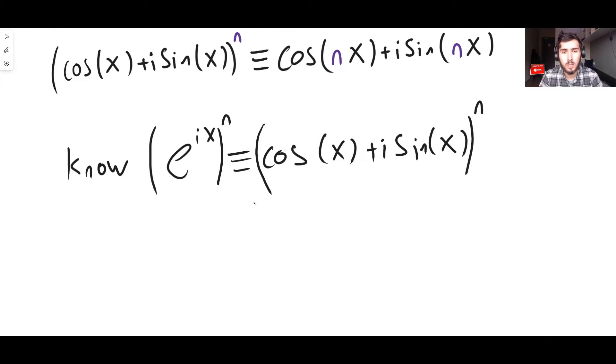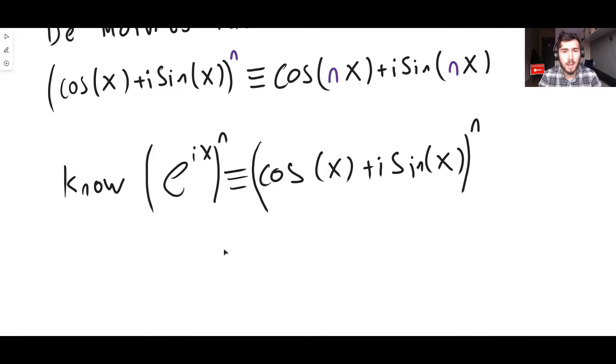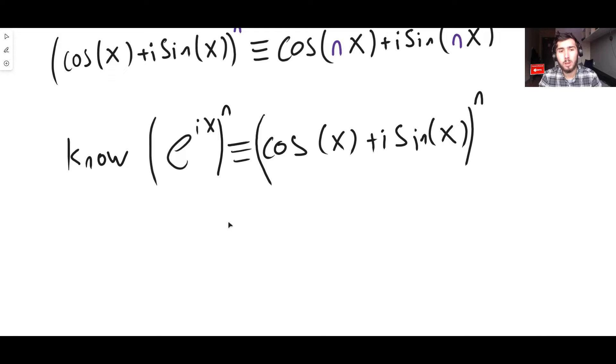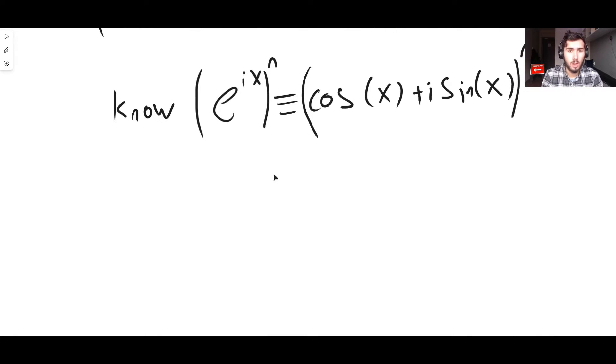All we've done is we've taken Euler's identity, and we've raised both sides to the power of n, where again, n can be any real number that you like. It doesn't matter what the number is.